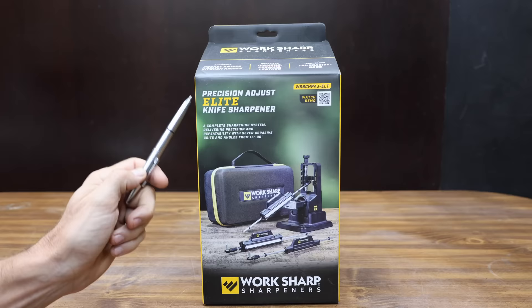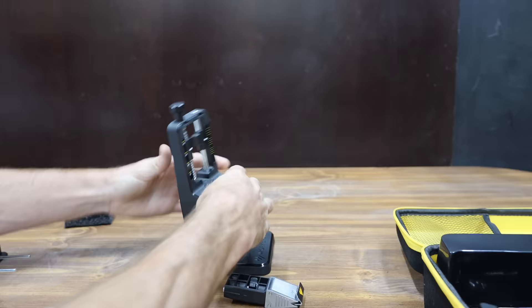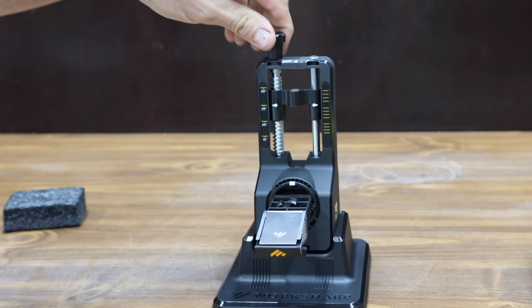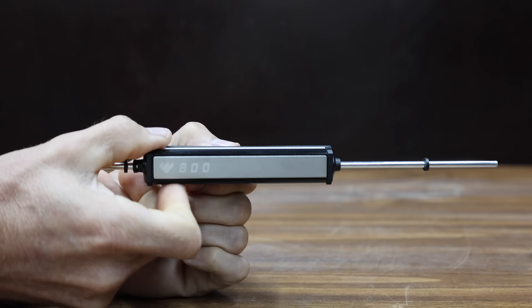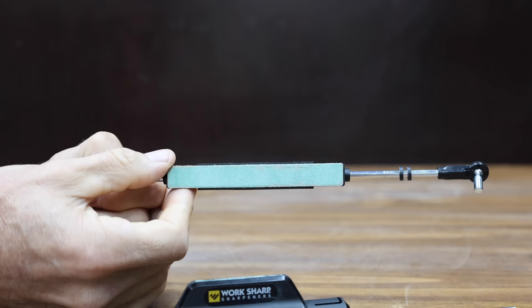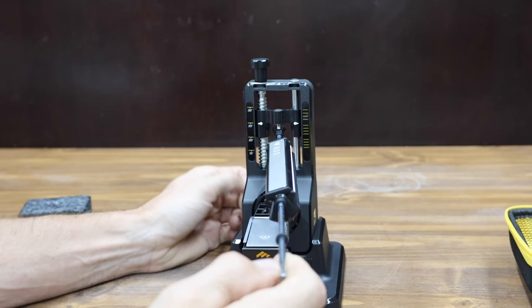At a price of $120 is this WorkSharp Precision Adjust Elite Knife Sharpener. The different pieces of the WorkSharp just snap together and it takes about 15 seconds to set up. Include seven abrasive grits including 220, 320, 400, 600, and 800 diamond, fine ceramic, leather strop, and a small ceramic rod. And the WorkSharp is made in USA.